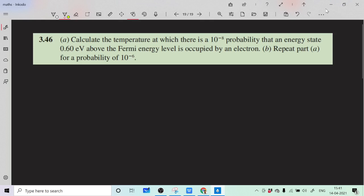So we will do part a first. What we know about Fermi-Dirac distribution function - the Fermi-Dirac distribution function is given as 1 upon 1 plus e raised to (E minus Ef) divided by kT. This is the formula for Fermi-Dirac distribution function.